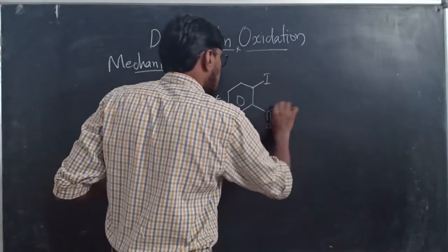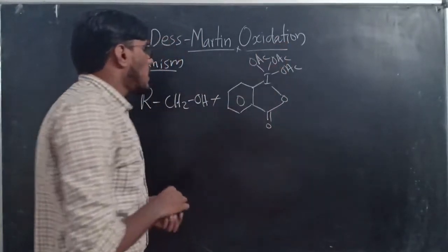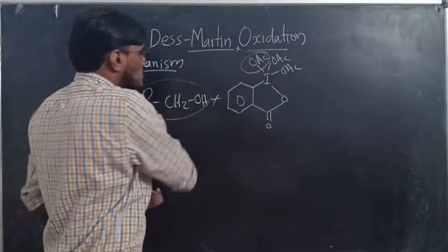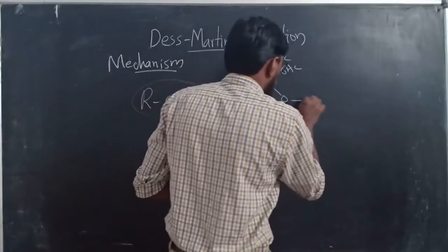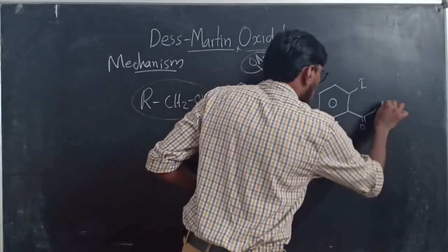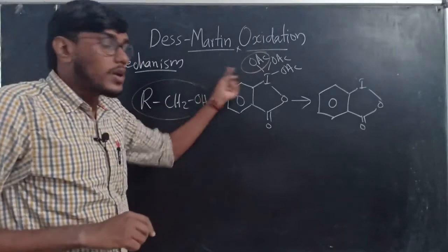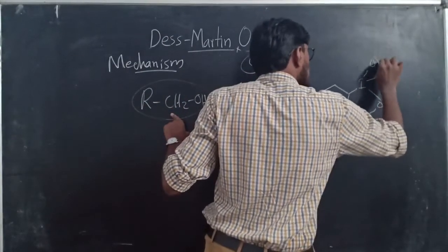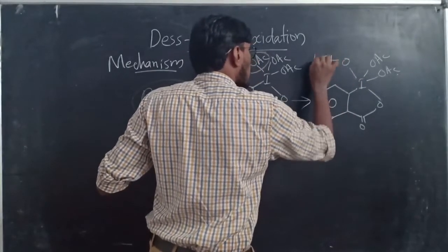The DMP has a C=O, an oxygen, and three OAc (acetate) groups. In the first step, one of the acetate groups is exchanged with the alcoholic group. So the iodine now bears two OAc groups and one –OCH₂R group, as one acetate is replaced by the alcohol.